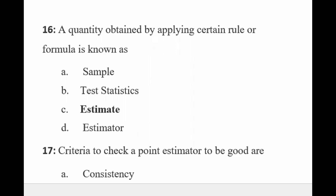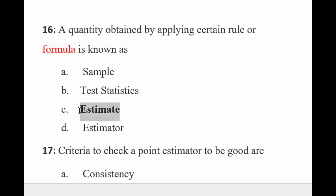In a discussion regarding statistics MCQs: a quantity obtained by applying a certain rule or formula is known as an estimator. When we know the estimation, we have one estimator. So when we use the formula, we always use the estimator — whether it's the mean or standard deviation. When we use a rule or formula, we use the estimator.